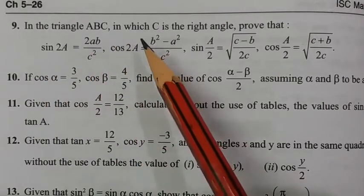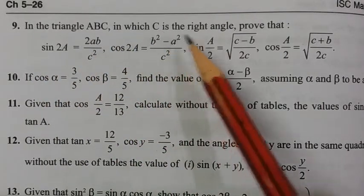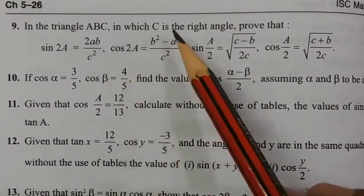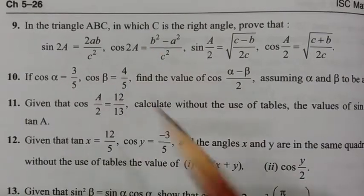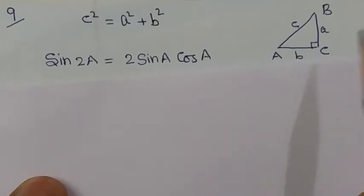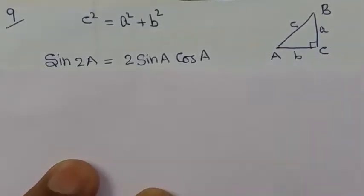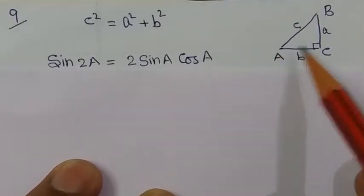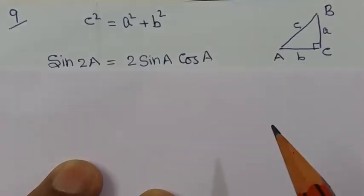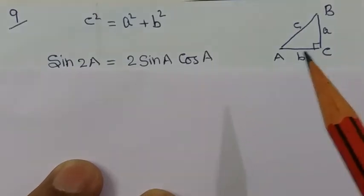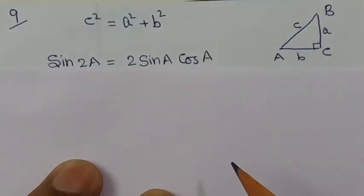In the triangle ABC in which angle C is the right angle, prove that these. First of all, make a right angle triangle in which angle C has a right angle. It is given that in a right angle triangle, angle C is a right angle — 90 degrees. Suppose A, C, B is a triangle. If a right angle triangle is represented by some vertex A, B and C.